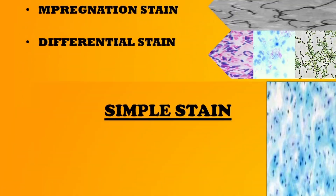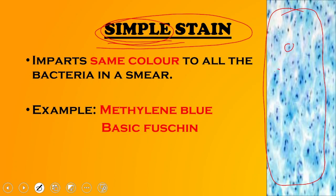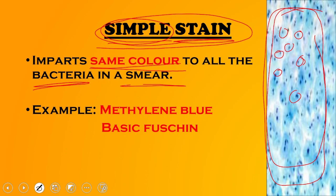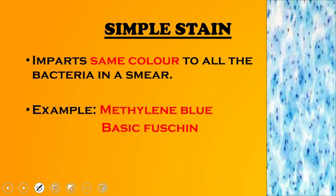First, the simple stain. As the name suggests, it is a very simple stain. Looking at the image on the right-hand side, all the bacteria present on the slide have the same color — it imparts the same color to every bacterium in the smear. Two important examples to remember are methylene blue and basic fuchsin.